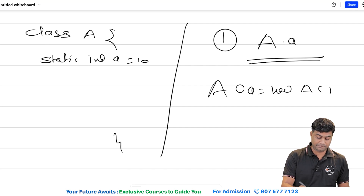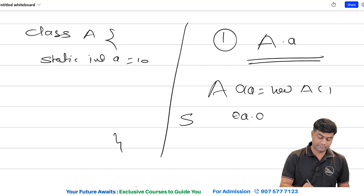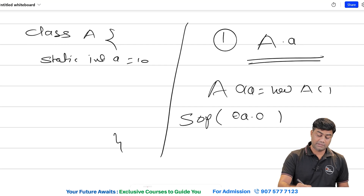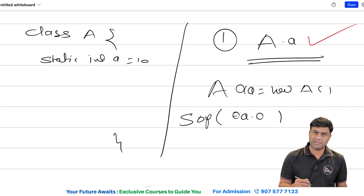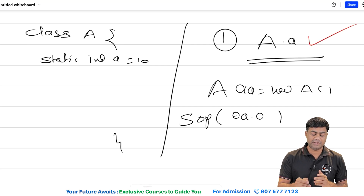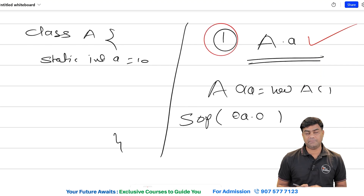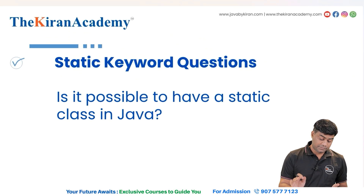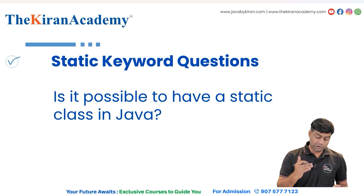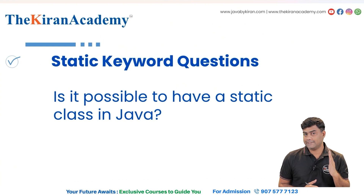The second way is to create an object like `A a = new A()` and then call `a.a`. Both ways work, but using the class name directly is more recommended. So remember there are two ways, but the first way — calling via class name — is always preferable.